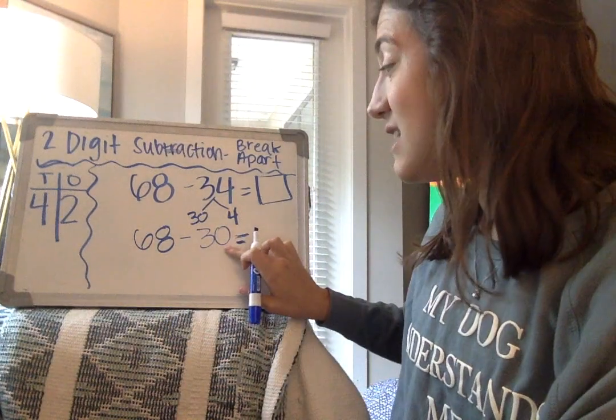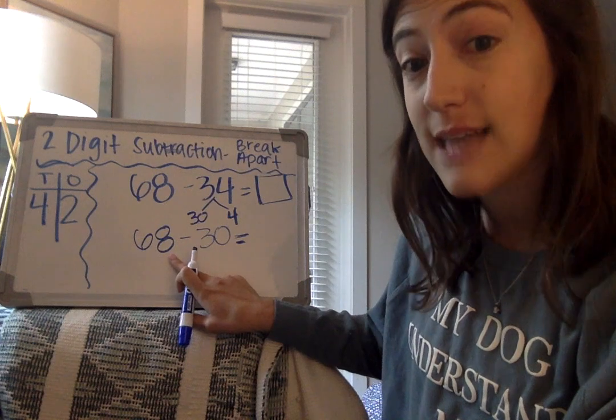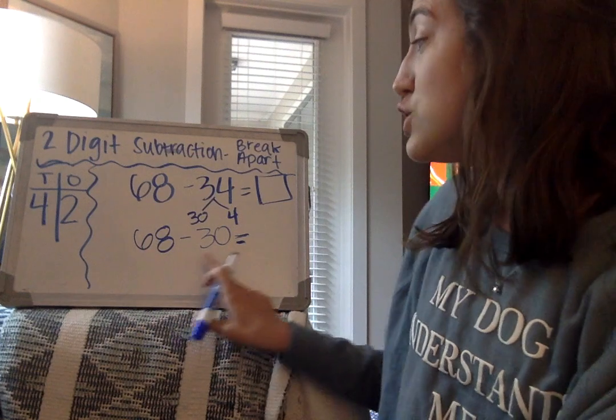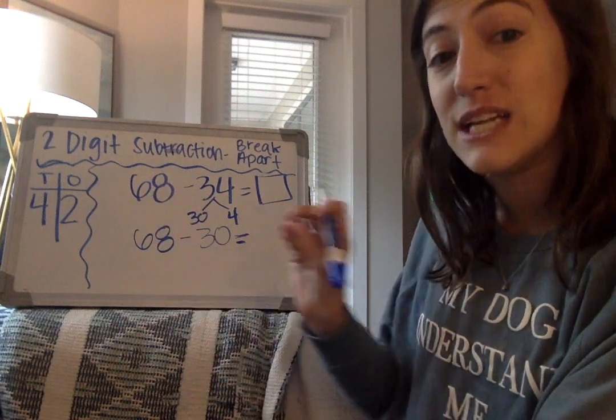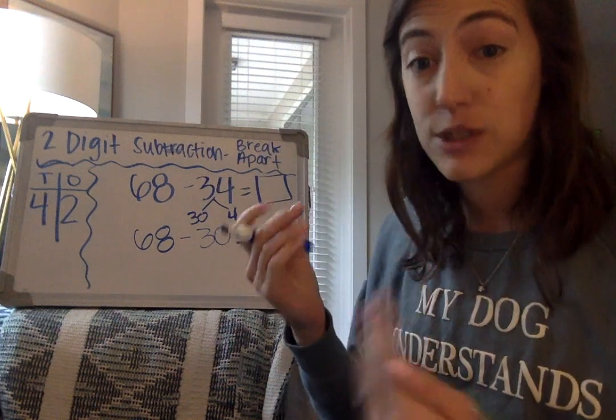Well, I see that there is a 0 in the ones place, so I know that my ones place is going to stay the same. But I see that I'm subtracting 3 tens from 6 tens. So I know that 68 minus 30, we will have to subtract tens and count backwards by tens.